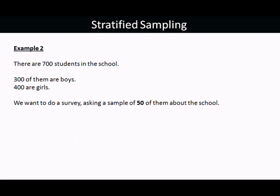Example 2. There are 700 students in the school — 300 are boys, 400 are girls. We want to do a survey asking 50 of them about the school, so a sample of 50.